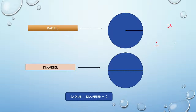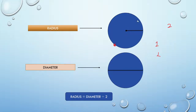The two conditions are: first, there should be a line segment whose starting point is one point on the circle and whose ending point is another point on the circle. The second condition is that it should pass through the center. A line touching two points on the surface of the circle and passing through the center is called diameter.